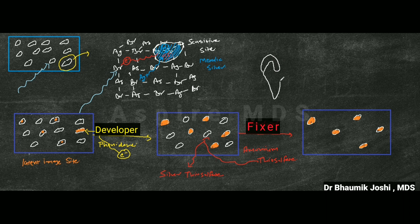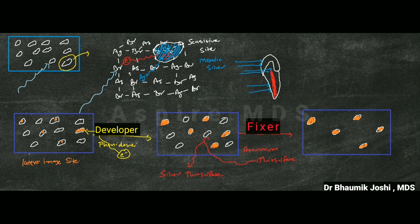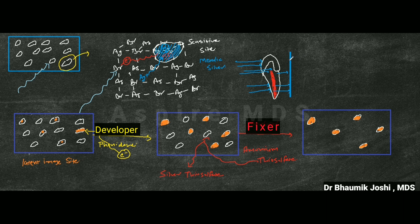Let's see this with an example: this is the tooth structure which has enamel, dentine, as well as the pulp. When you expose this tooth to x-rays, x-rays will pass through the enamel, through the dentine, as well as through the pulp, and after passing through them they'll be received by the image receptor — our x-ray film. Because the pulp is totally radiolucent, it allows all the x-rays to pass through. Dentine allows some of the x-rays to pass, and enamel will not allow any x-rays to pass.